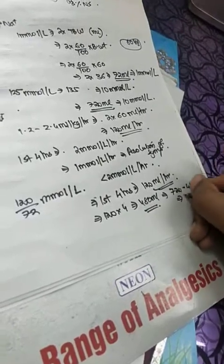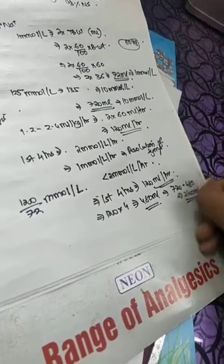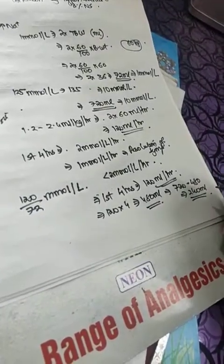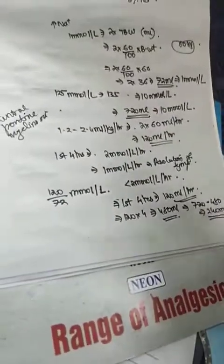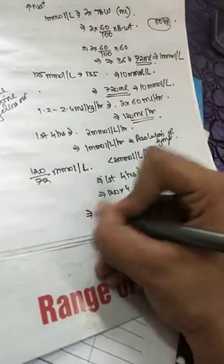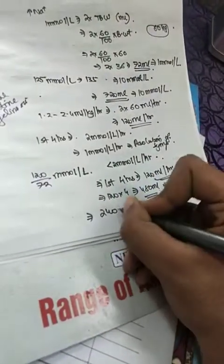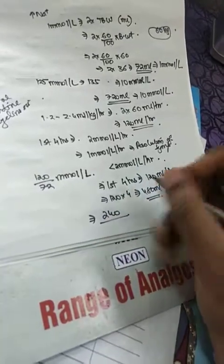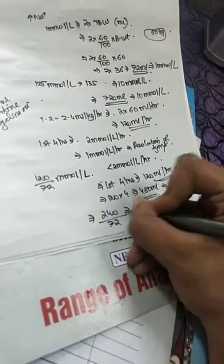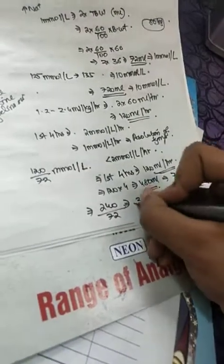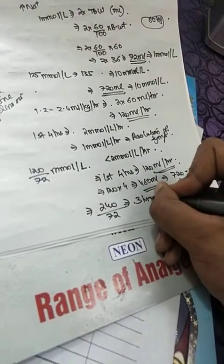So we are left with how many more ml? 720 minus 480, that is 240 ml. Now this 240 ml should be infused at a slower rate, at one millimole per liter per hour, that is at 72 ml per hour.